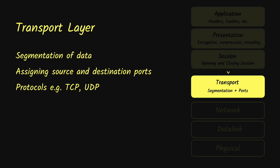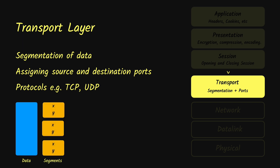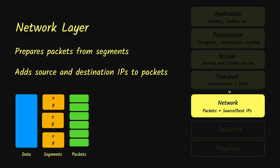Next we have the transport layer, where the data gets broken down into smaller pieces called segments. At the transport layer, the source and destination ports are also assigned to each segment. The protocols which operate at this layer are TCP and UDP. Next comes the network layer, which is responsible for further breaking down the segments into packets and also assigning the source and destination IP address to each packet.